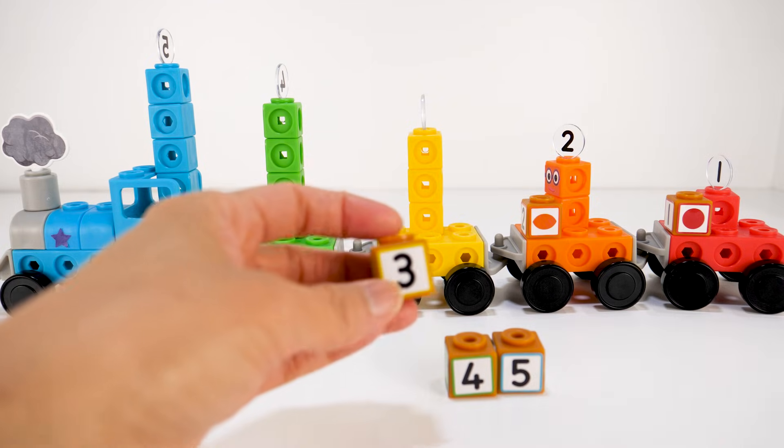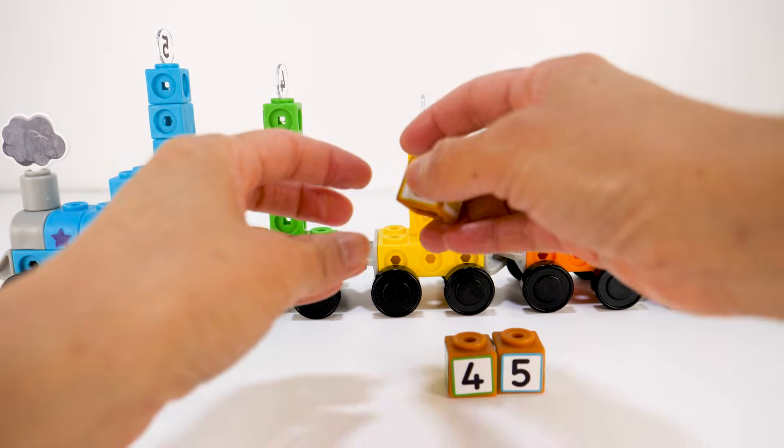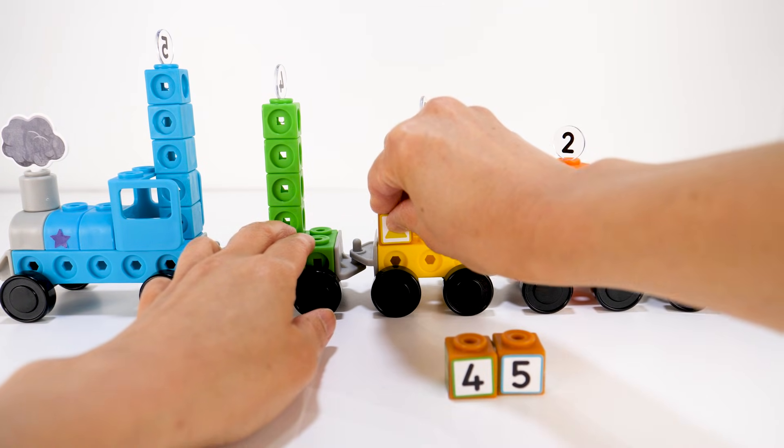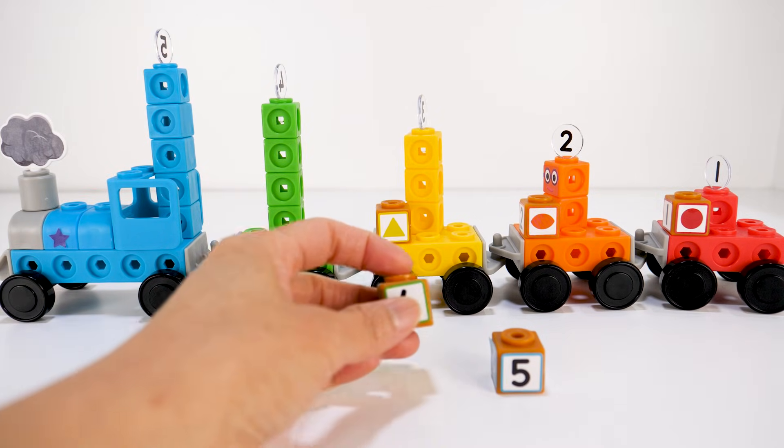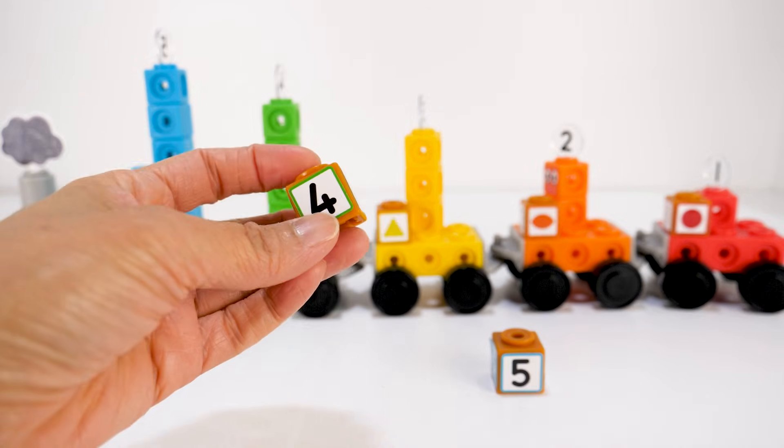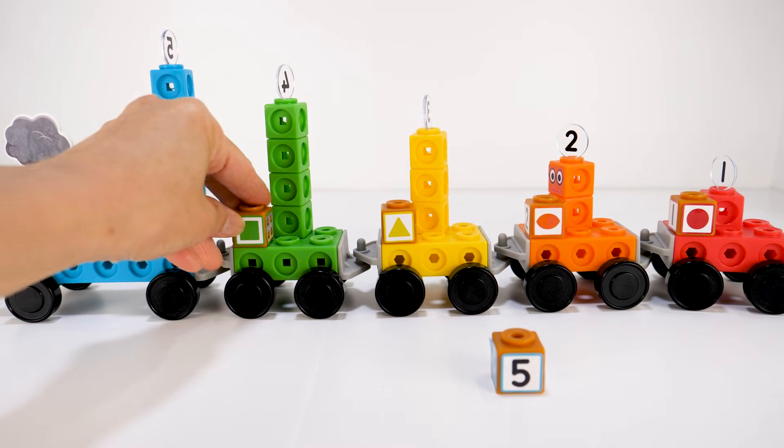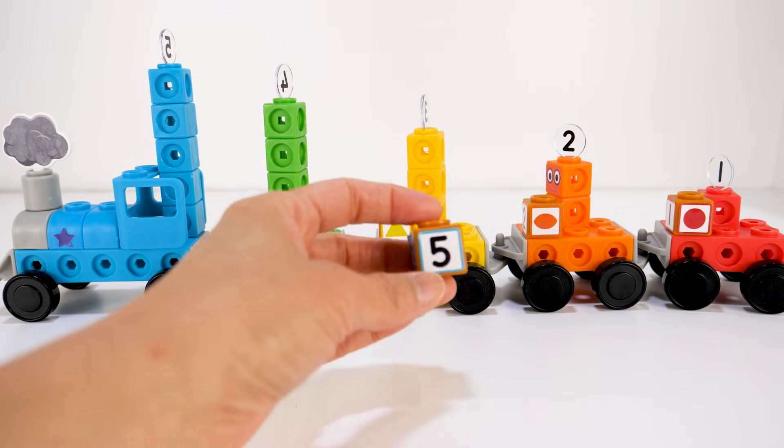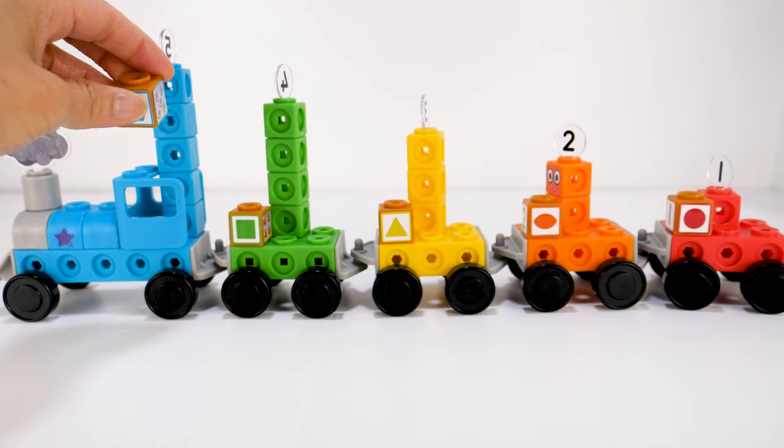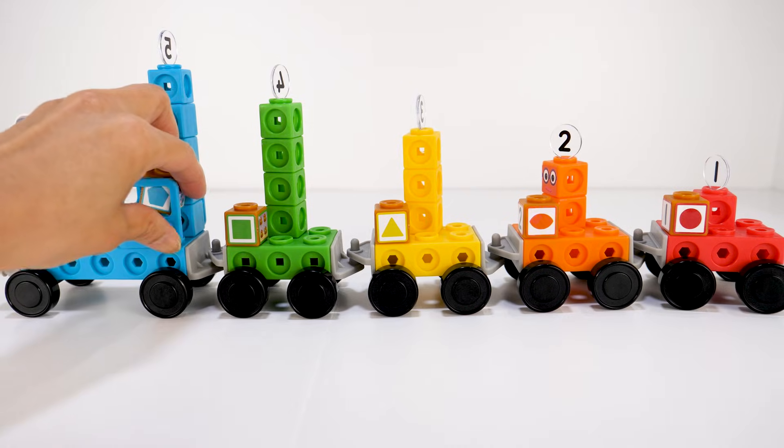Cargo three has the number three on it, so it goes with number block three. Cargo four has the number four on it, so it goes with number block four. The last cargo, cargo five, goes here with number block five.